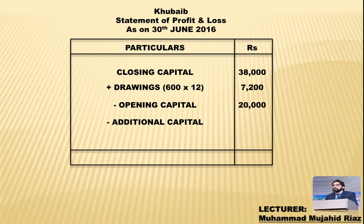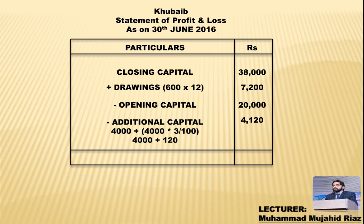Minus کریں گے additional capital۔ اس نے چار ہزار روپے کی investment تین فیصد premium پہ بیچی — تو 4,000 + 3% of 4,000 = 120 روپیز premium۔ Total investment sale: 4,120 روپیز — یہ additional capital ہے۔ تو 38,000 + 7,200 − 20,000 − 4,120 = 21,080 روپیز۔